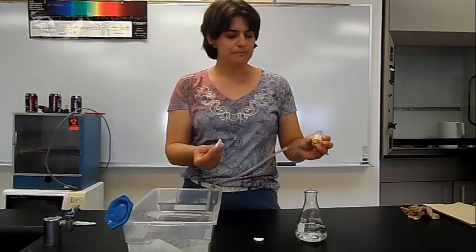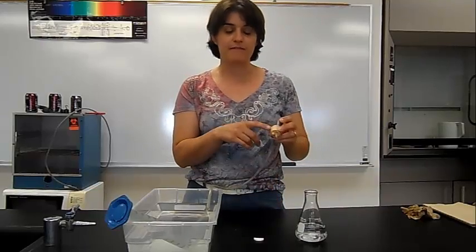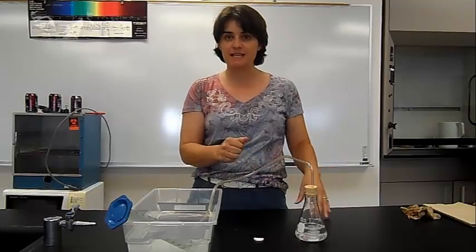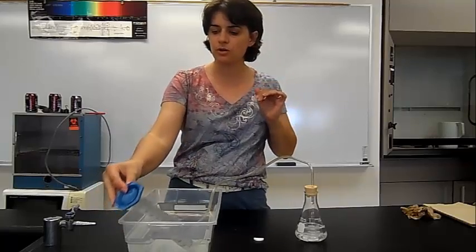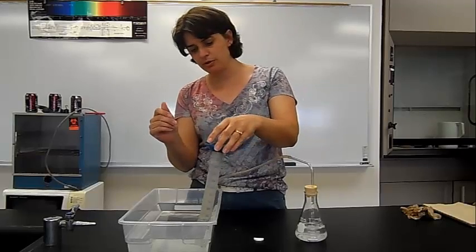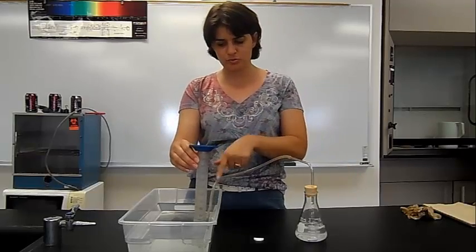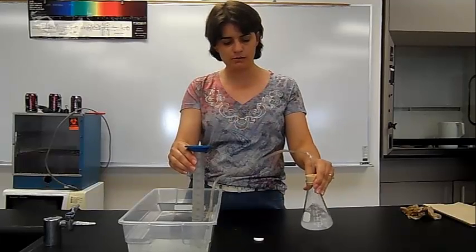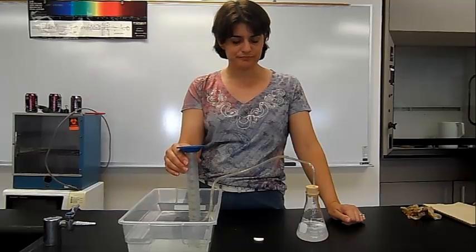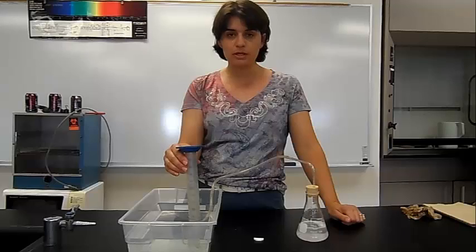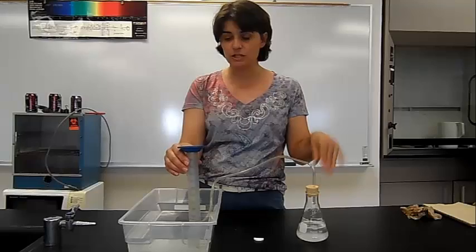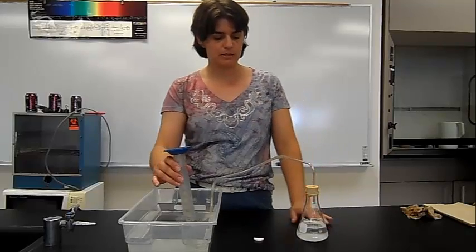We are going to take our Alka-Seltzer tablet and we are going to put it into the flask and very quickly stopper that. We don't want to lose any gas that is being produced. We want it all to go into our graduated cylinder. So you can see those gas bubbles being produced. So it is coming up through this tube and into our graduated cylinder. We are just going to keep collecting that. You want to keep going until all of the Alka-Seltzer has been dissolved. So it is going to stop bubbling eventually and that is when you can stop and take your volume.